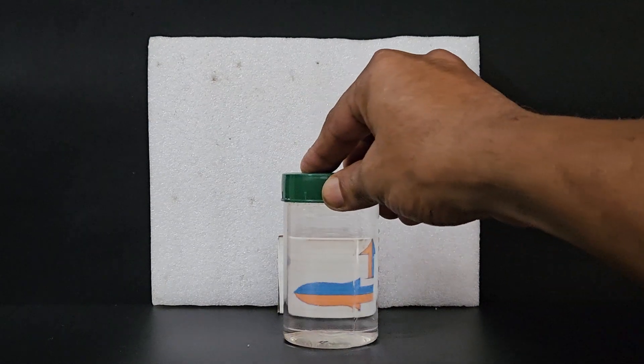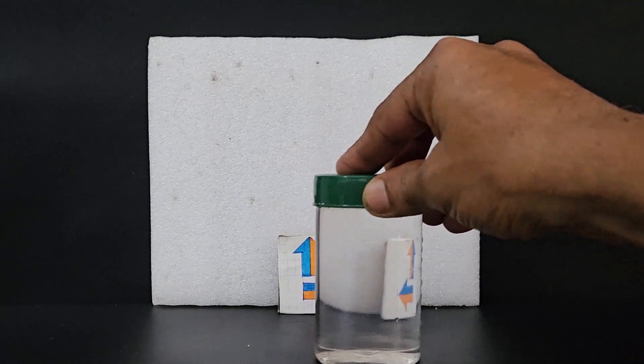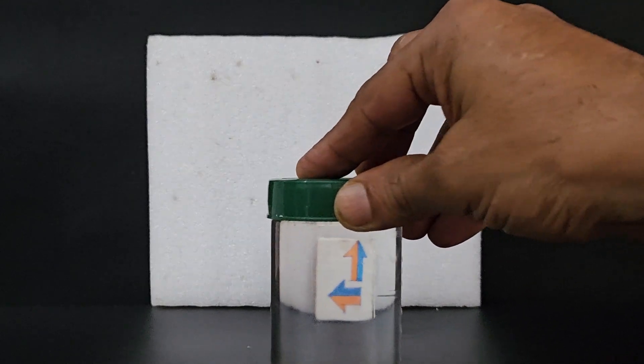So for the lateral inversion to occur, the container has to be at a certain distance from the object, that is those two arrows. Look at that.